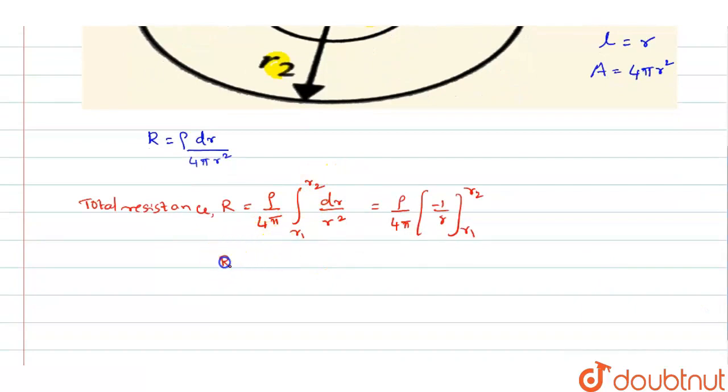You can write R equals rho by 4 pi into 1 by, when you apply both lower and upper limit, you will get it as 1 by R1 minus 1 by R2.